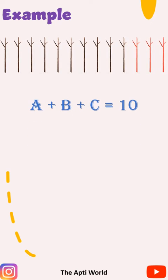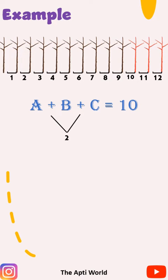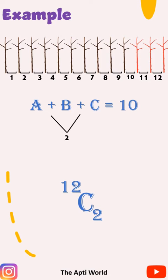Now, we can see that there are 12 slots between these sticks, out of which we have to select two for placing the plus signs. The number of ways of doing this would be 12 C2. Here C is used to denote combination.